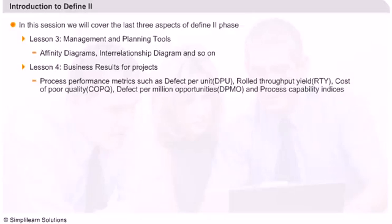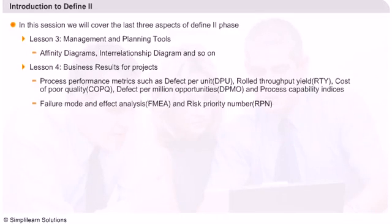As we proceed, we will look at the failure mode and effective analysis, FMEA, and the risk priority number which is also known as RPN.